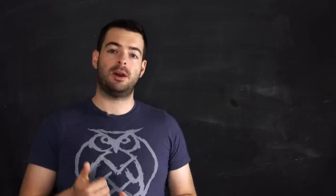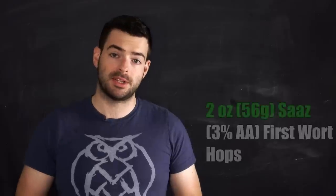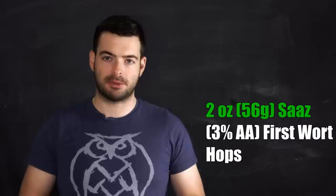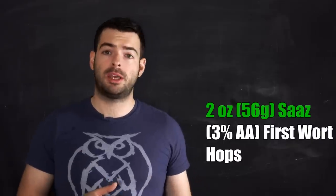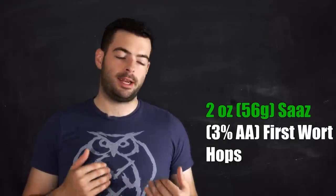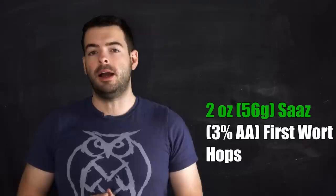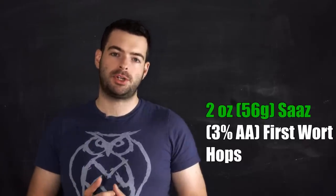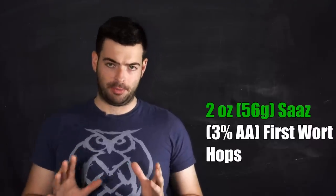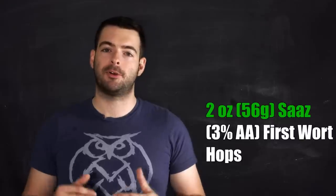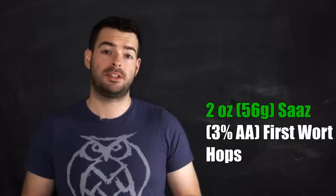So one thing we're going to start out with though that's a little bit different than the last brew is a first wort hop. We're going to do 2 ounces of Saaz at a first wort hop. And what that means is right after the mash is completed and we're sitting at mash out temperatures, we chuck in those hops. So those hops actually stay in the wort the entire time that it's heating up to a boil and then all the way through the boil as well.